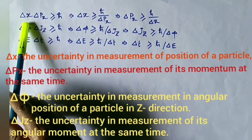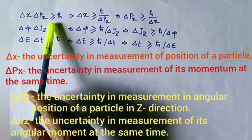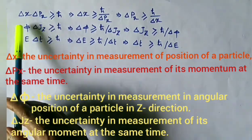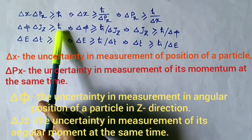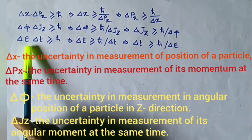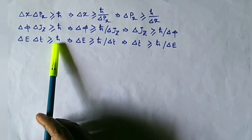So that delta x delta px greater than or equal to h-bar, delta phi delta jz greater than or equal to h-bar, and delta E delta t greater than or equal to h-bar.